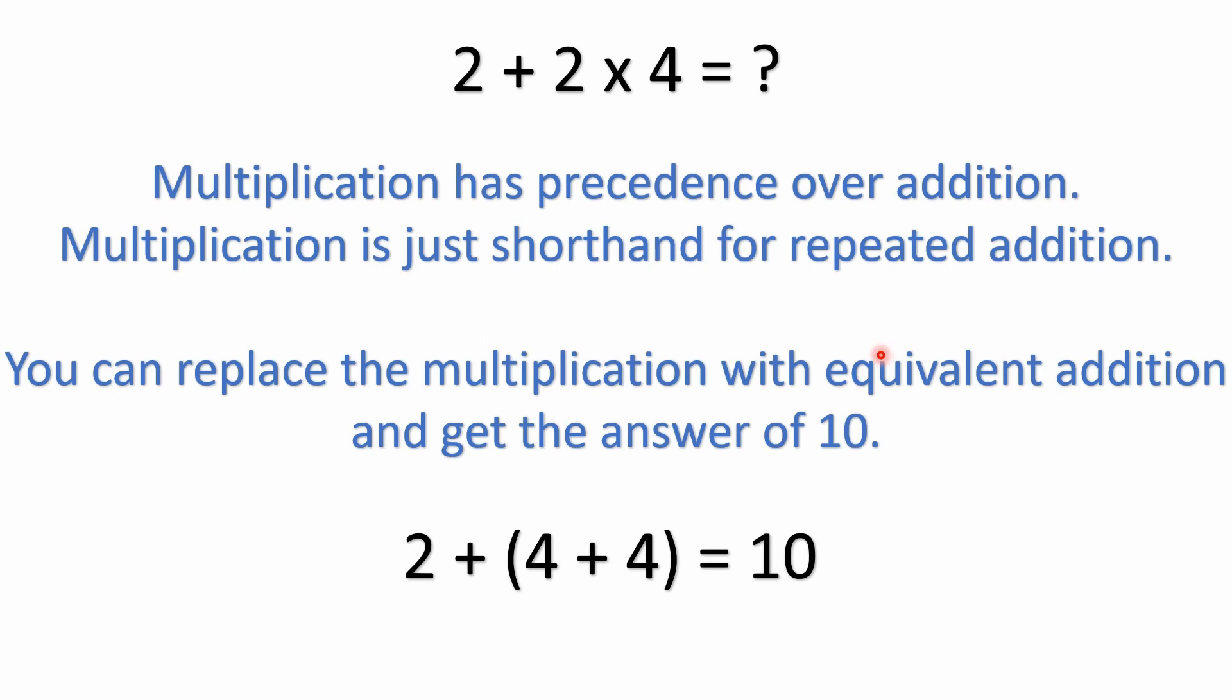All right, well that was quick. Again, this is a pretty easy one, but I have seen a lot of wrong answers. You gotta remember that multiplication has precedence over addition. Multiplication is just shorthand for repeated addition. You can actually show that by replacing the multiplication with equivalent addition and you get the correct answer of 10. So if you replace 2 times 4, 2 times 4 is the same thing as 4+4. So 2+4 is 6, 6+4 is 10.